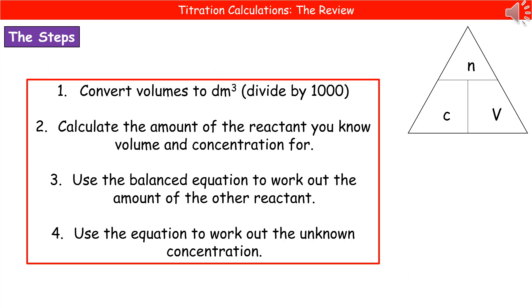I know that when you look at these titration calculations, they look incredibly complex, and you think: how on earth am I going to remember how to do this? The reality is, we've only got four steps. First: convert the volumes to decimetres cubed by dividing by a thousand. Second: calculate the amount of the reactant we know the volume and concentration for. Third: use the balanced equation to work out the amount of our other reactant. Fourth: use our formula once more to work out the unknown concentration.